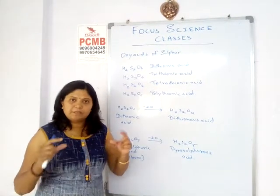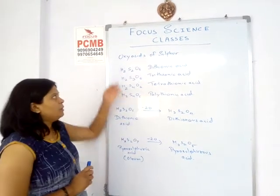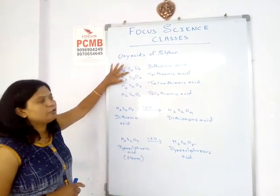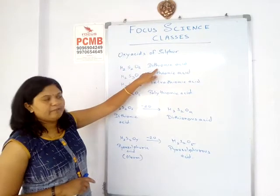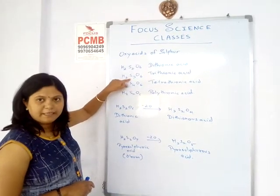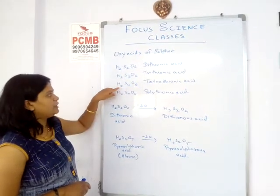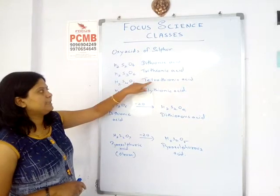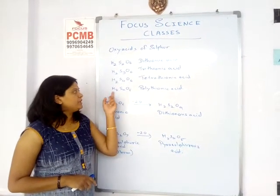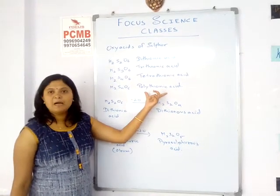The dithionic series: 'thio' refers to sulfur. So dithionic means two moles of sulfur. The formula of dithionic acid is H₂S₂O₆, which has two moles of sulfur. If we increase the sulfur content, we get H₂S₃O₆, called triathionic acid; then H₂S₄O₆, tetrathionic acid. In general, the formula is H₂SnO₆, where n is the number of sulfur atoms — this gives the polythionic acid series.